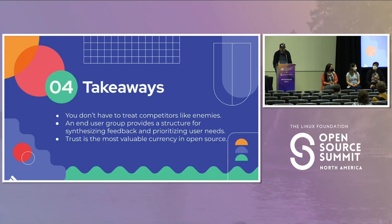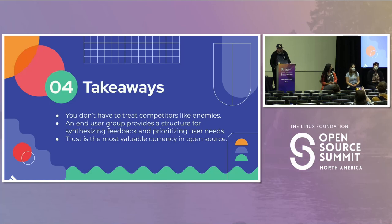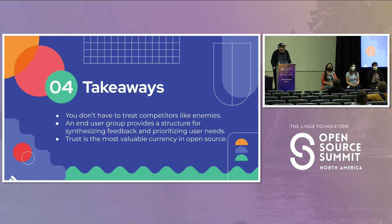We're at about seven minutes remaining and we've covered a lot of the takeaways we planned. The key values: your competitors are not your enemies — the pool is big enough for everyone to swim. The end user group provides a strong structure to synthesize feedback and be that filling of the sandwich. The most valuable currency in open source and in life is trust, and trust is very hard to build — it took years. One challenge we face is that a lot of that trust exists because of individual human beings still in leadership positions in the project. How do we encode that into governance so our ability to trust each other persists even when people move on?